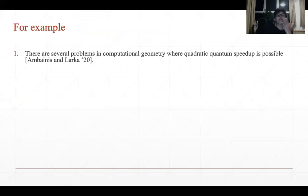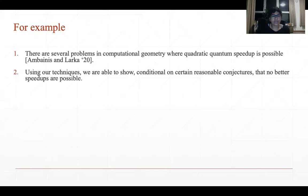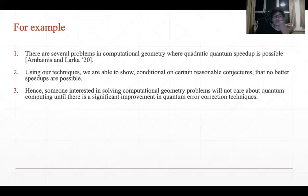For example, there are several computational geometry problems for which Ambainis and Larka in 2020 gave almost linear algorithms, showing that a quadratic speedup for these problems was possible using quantum computers as opposed to classical ones. Using our techniques, we are able to show that, conditional on some reasonable conjectures, the algorithms that Ambainis and Larka gave are actually optimal. Invoking the recent result by Babbush et al., we can then see that for computational geometry problems, quantum computing is not going to help much, at least in the near-term future, unless there is significant improvement in error-correcting techniques.